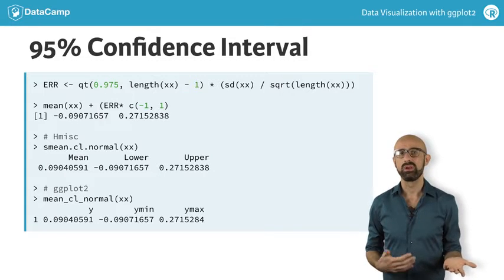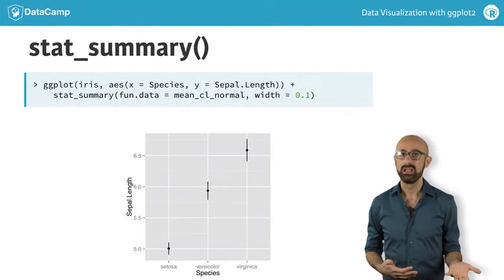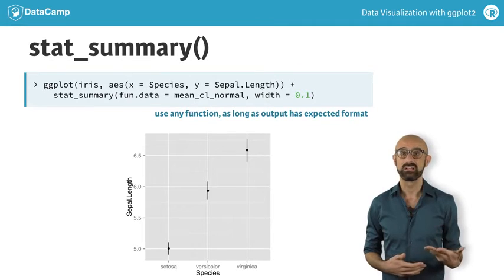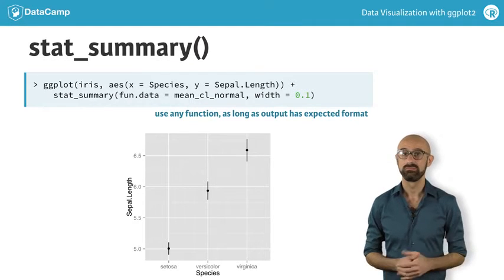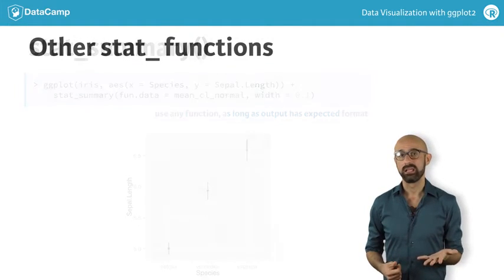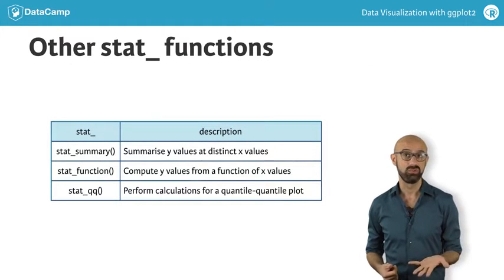It should be obvious that we can use whatever function we want in stat_summary, as long as the output matches the format expected by the geom that is called. Two other useful stat layer functions are stat_function and stat_qq.